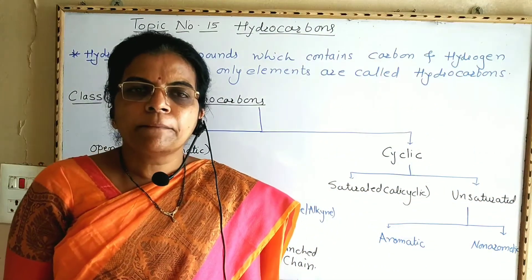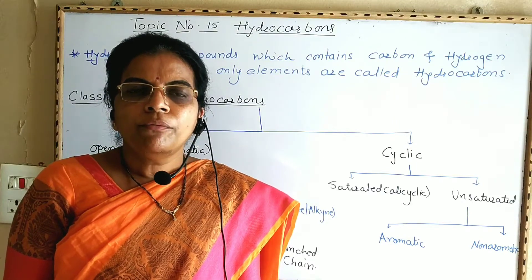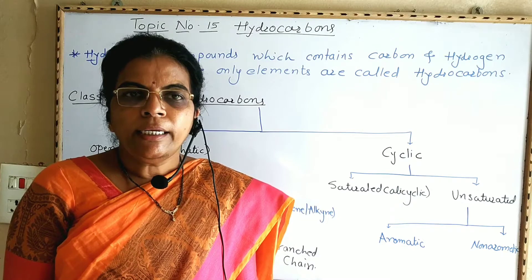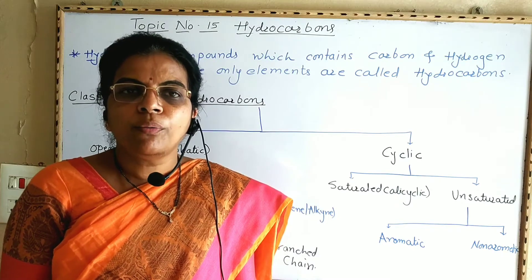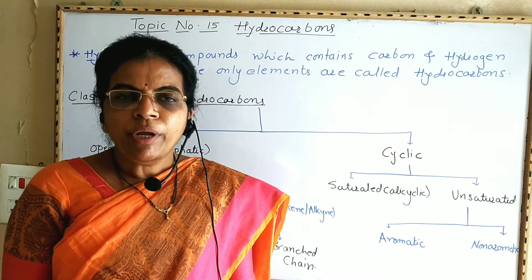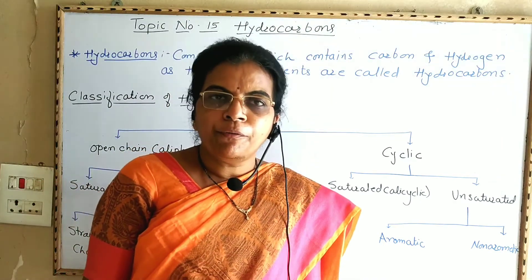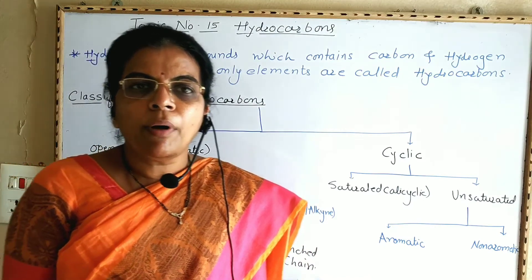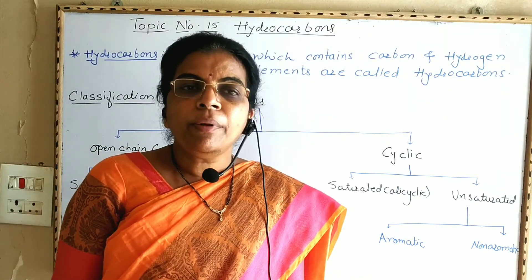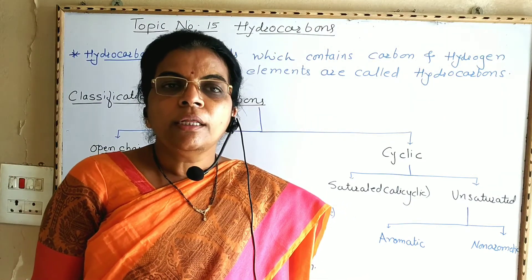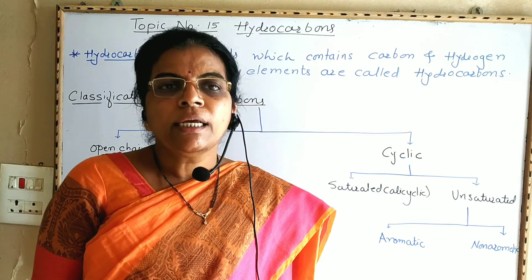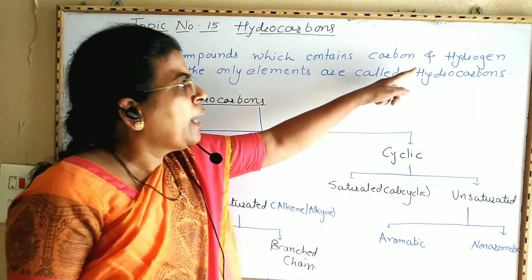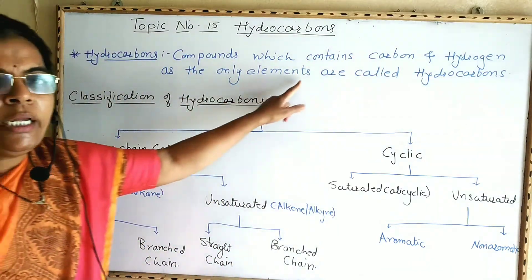Good morning students. Last time we completed topic number 14, that is basic principles of organic chemistry. Now we are going to start new topic, topic number 15: hydrocarbons. Hydrocarbons are compounds which contain carbon and hydrogen atoms in the molecule — that is, compounds which contain carbon and hydrogen as the only elements are called hydrocarbons.